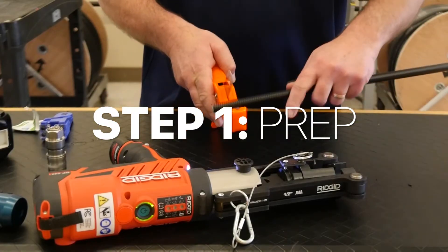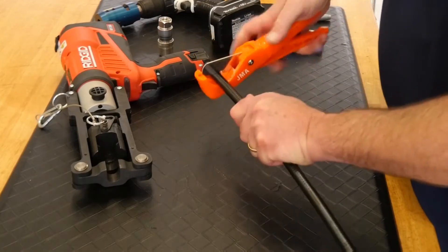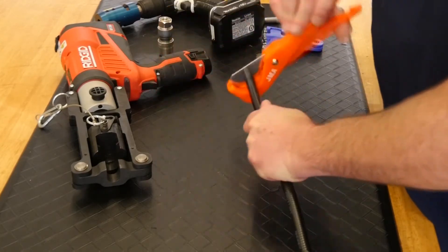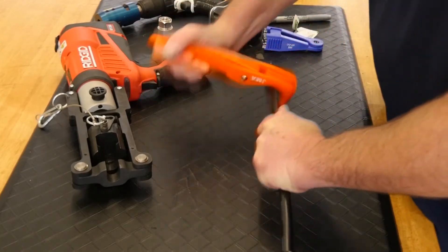To begin, straighten the cable and using RD Cutter S, apply even pressure while rotating the tool around the cable to cut squarely.